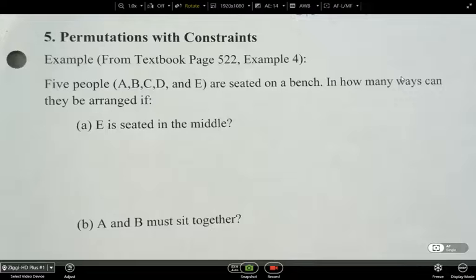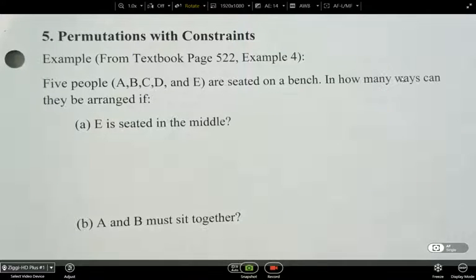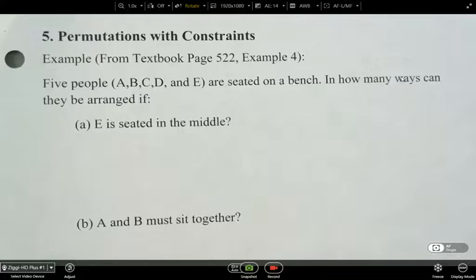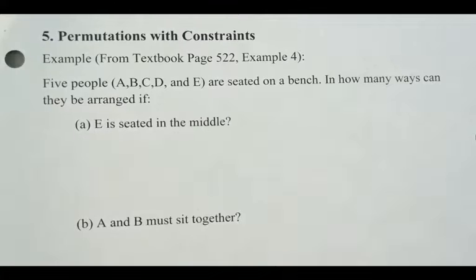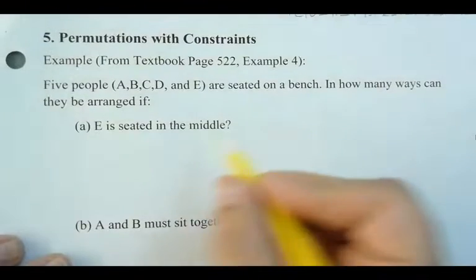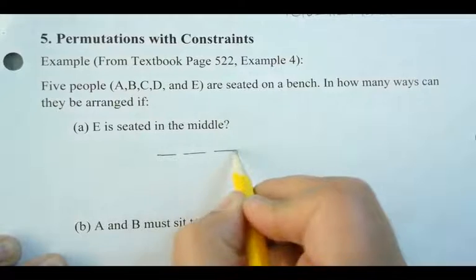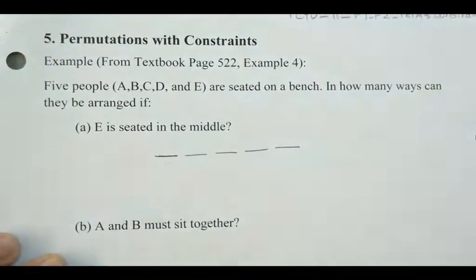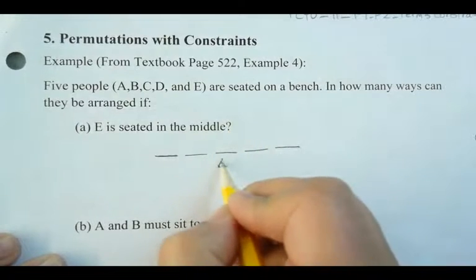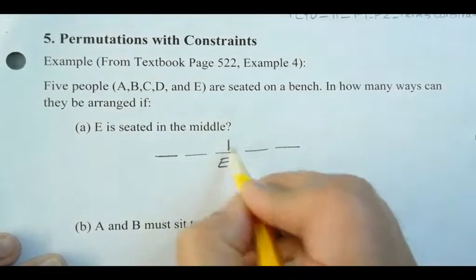In this video we're going to talk about permutations with constraints. A constraint is a restriction of some sort — something that must be done. Here we've got five people, A, B, C, D, and E, seated on a bench. How many ways can they be arranged given certain conditions? If E is seated in the middle, one of the five seats is already taken, so there's only one way to arrange that position.